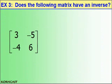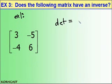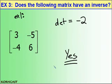Let's look at Example 3. This matrix is the same matrix from Example 1. Does it have an inverse? Well, recall the determinant we calculated for this matrix was negative 2. Since negative 2 does not equal zero, yes — this matrix does have an inverse. If you were asked to find the inverse, you could do so.